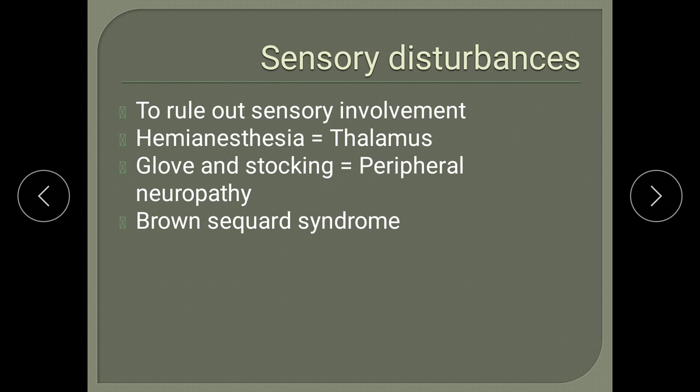Apart from the motor system, ask about the sensory system — any sensory losses, hemisensory loss, or patchy loss of sensations. Glove and stocking pattern of sensory loss points to a diagnosis of peripheral neuropathy, and hemianesthesia gives a clue about thalamic stroke.